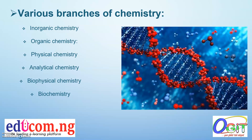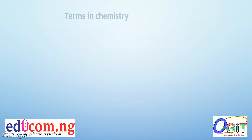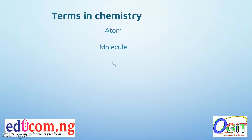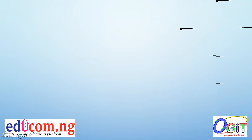Biophysical chemistry is the use of physical chemistry in a biology context. Biochemistry is the study of the chemical compositions contained in living things, such as DNA, chemistry, and protein. Now we move on to the terms in chemistry: atom, molecule, ions, element, compound, and atomicity.